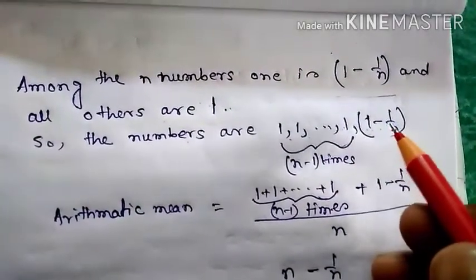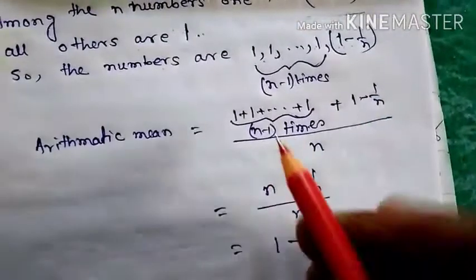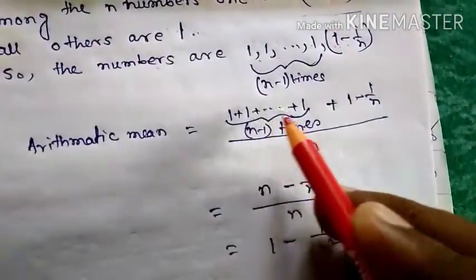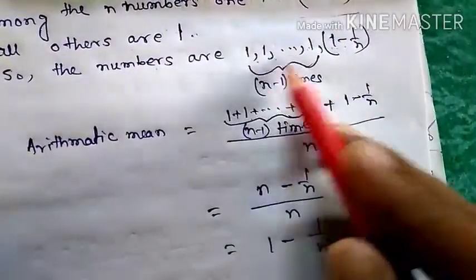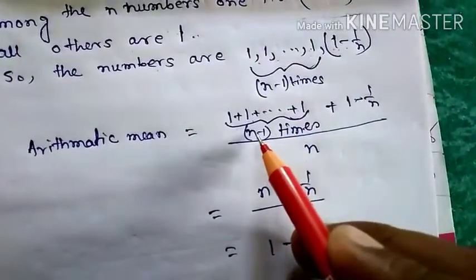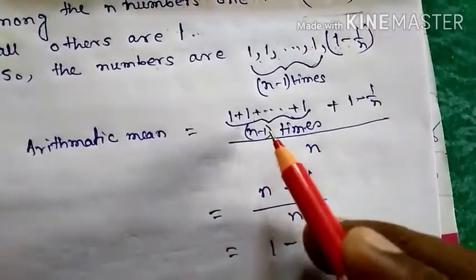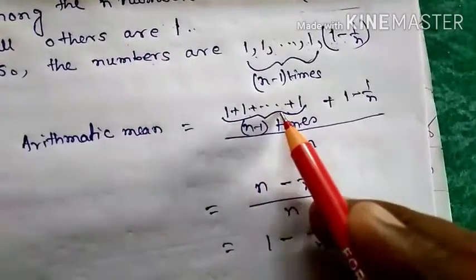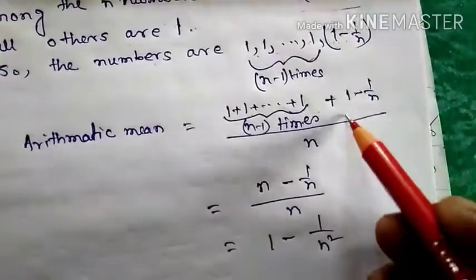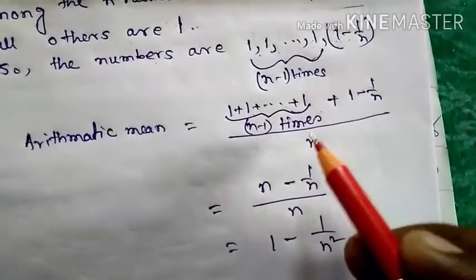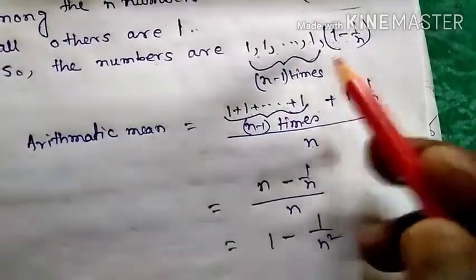Their arithmetic mean is 1 plus 1 plus dot dot plus 1, so sum of all these ones. Those are n minus 1 in numbers, so n minus 1 times addition of 1, plus the nth term 1 minus 1 by n, divided by n, because there are n numbers total. So we divide the sum by n.